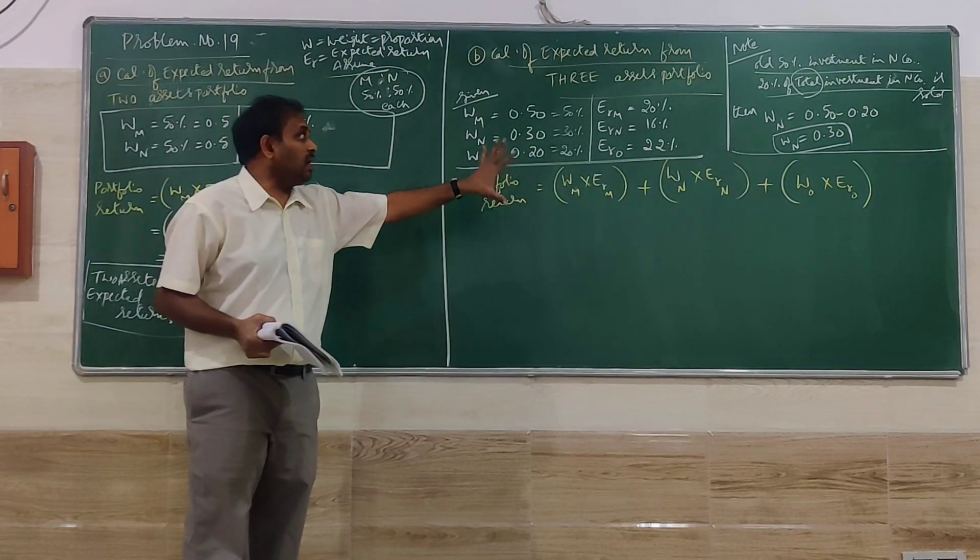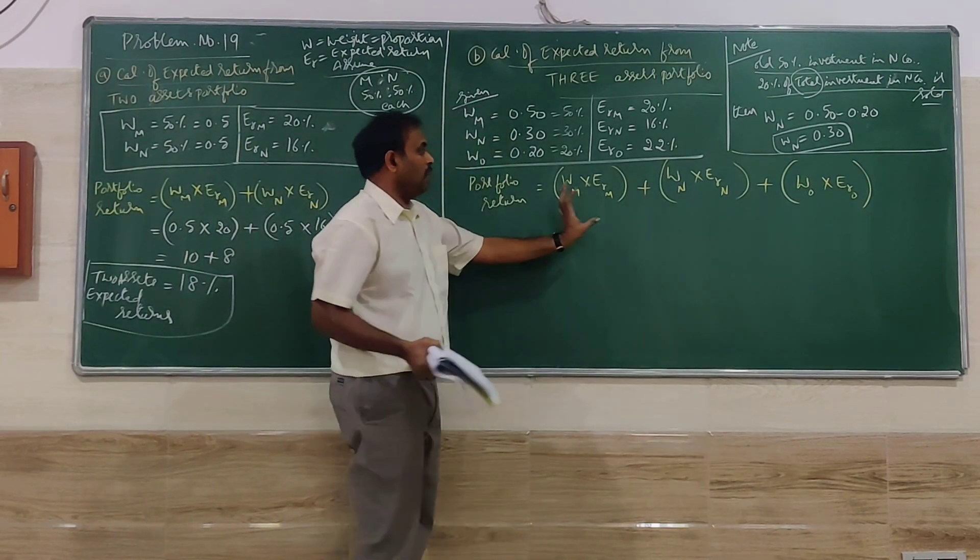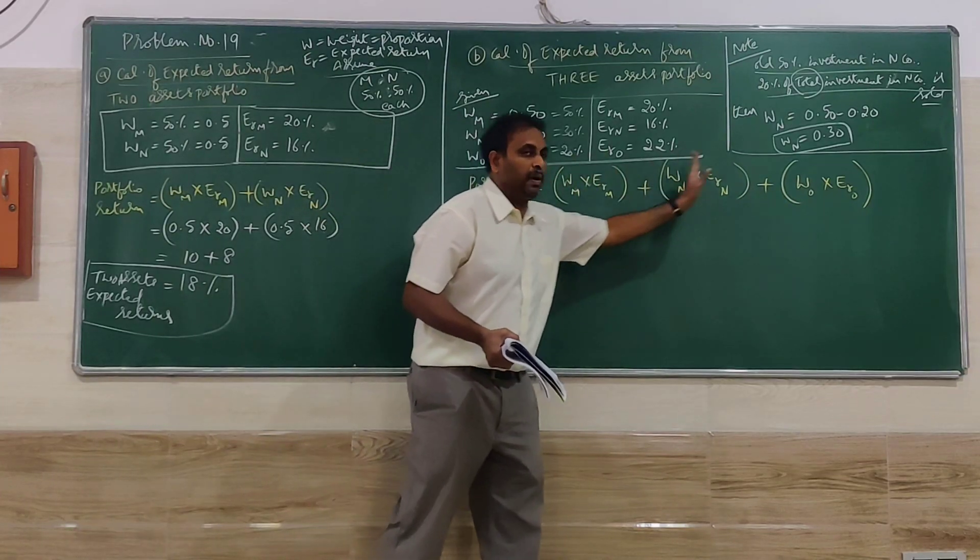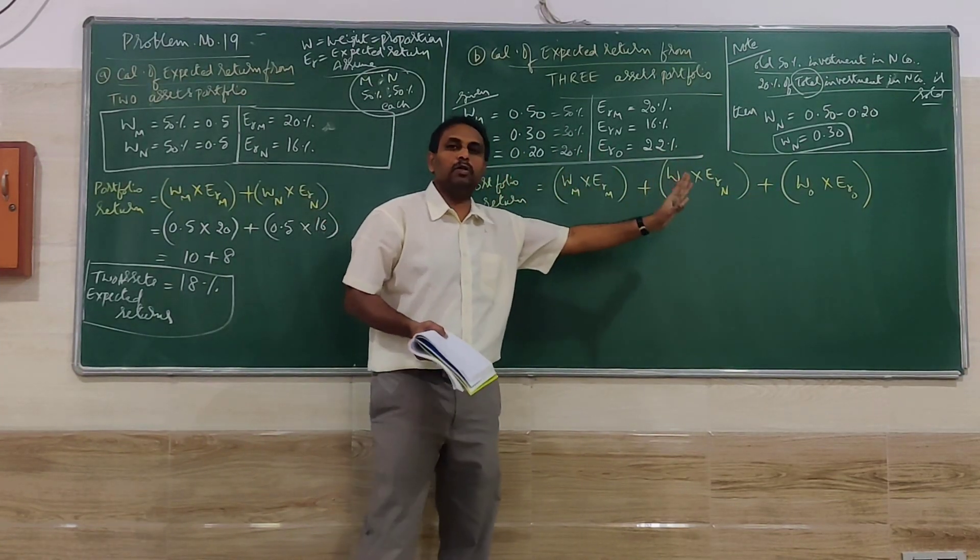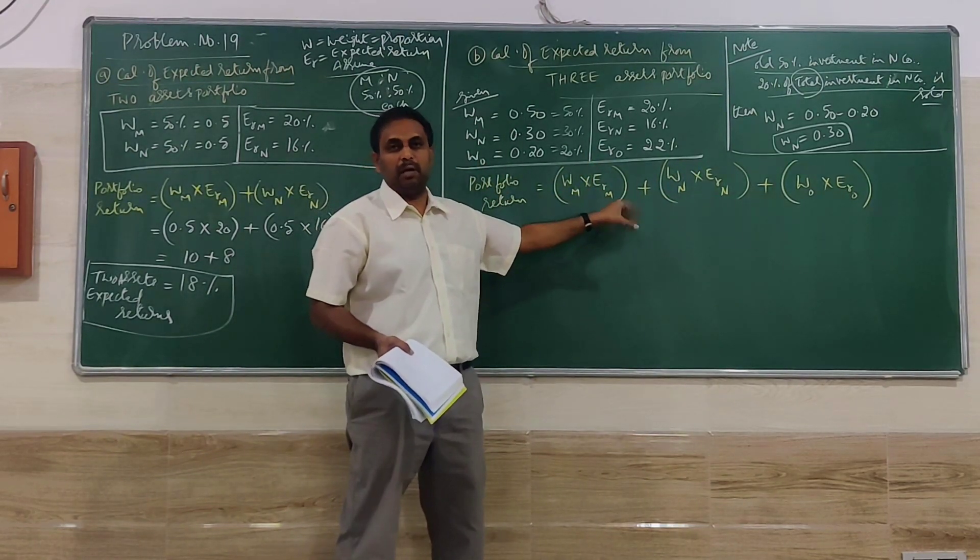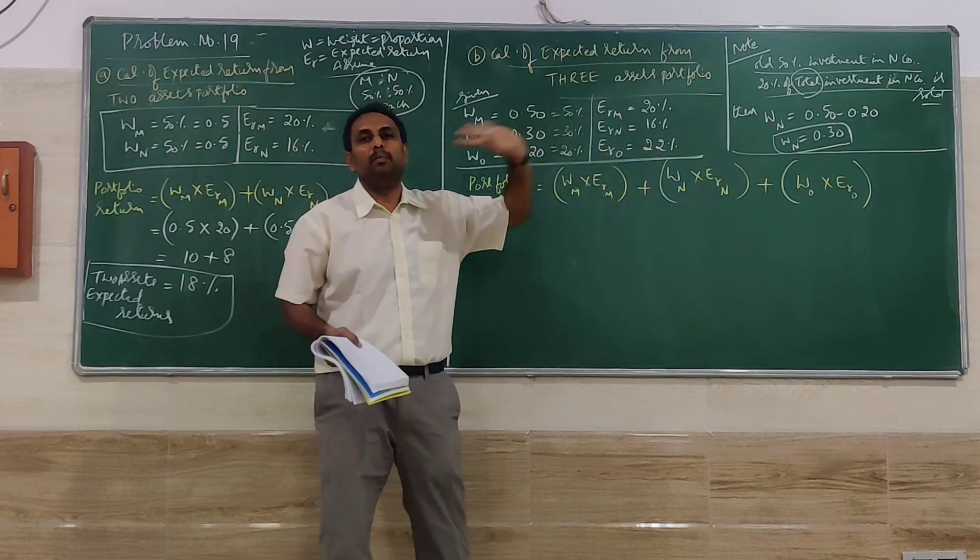Now we calculate the 3-asset portfolio return. Whatever we had for 2 portfolios, we repeat for 3 portfolios. If it's 5 also the same, 6 also the same—weight into expected return, plus weight into expected return, and so on.